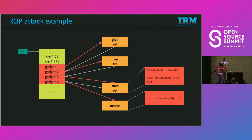What happens: the first gadget puts a return address of the first chunk of code. That code runs and prepares arguments, for instance, and then it returns back to the stack, and there is a RET instruction. The RET instruction fetches the address of gadget 2, jumps to the second piece of code, and in the end we essentially get a move something to RDI and then call system. Supposing this address of 0x404040 is being bash — we're kind of done. The system is ours, we have a shell.